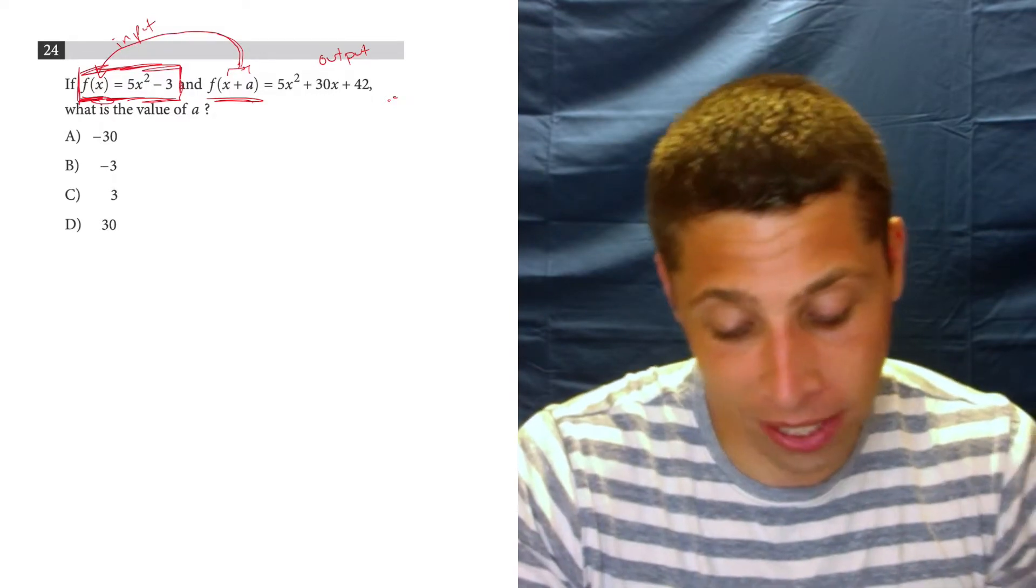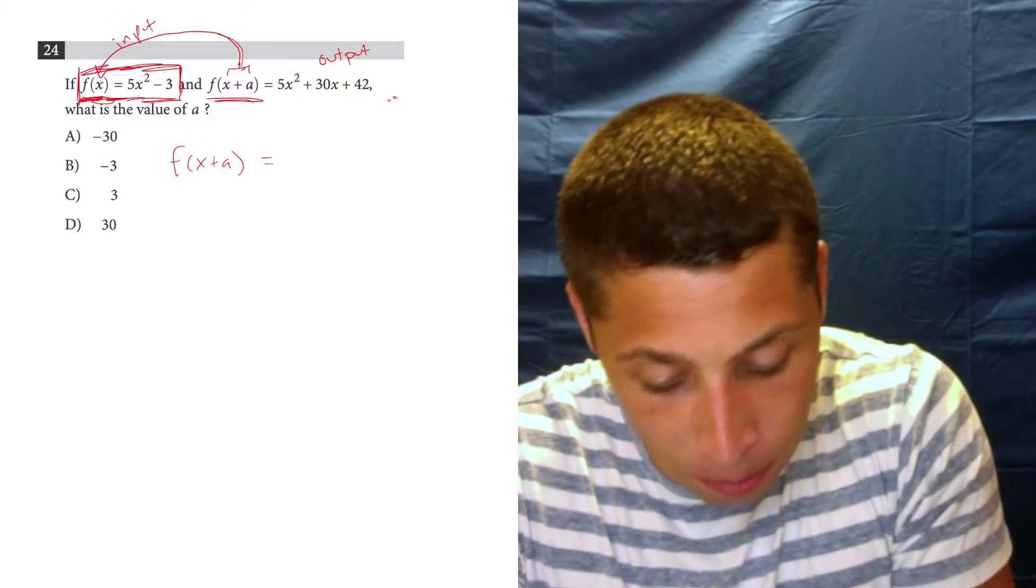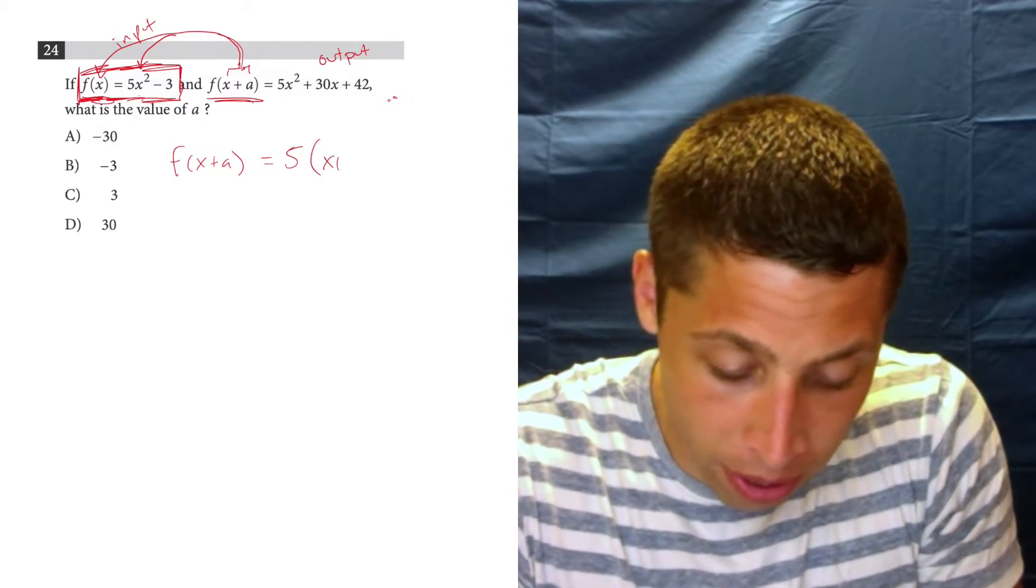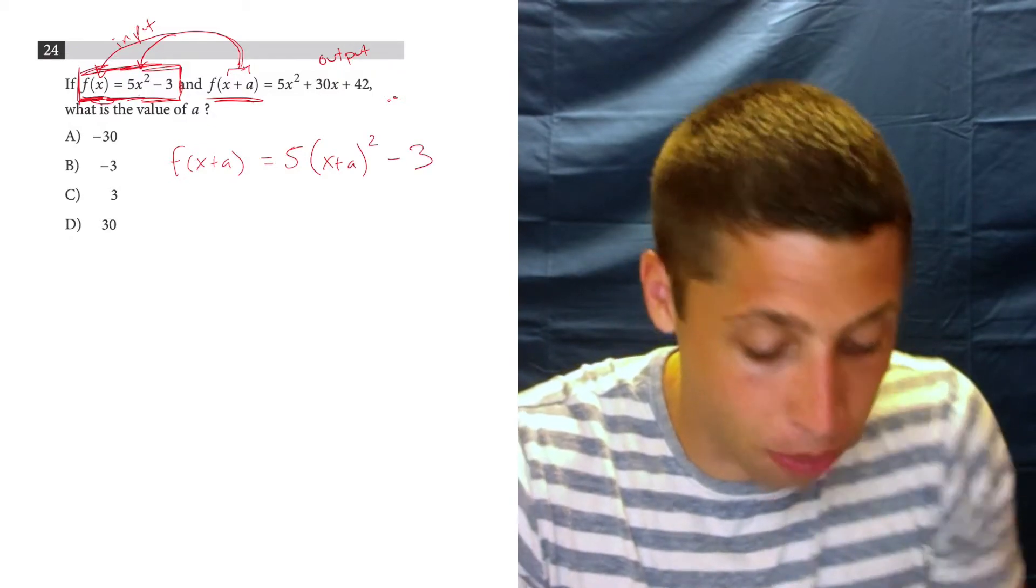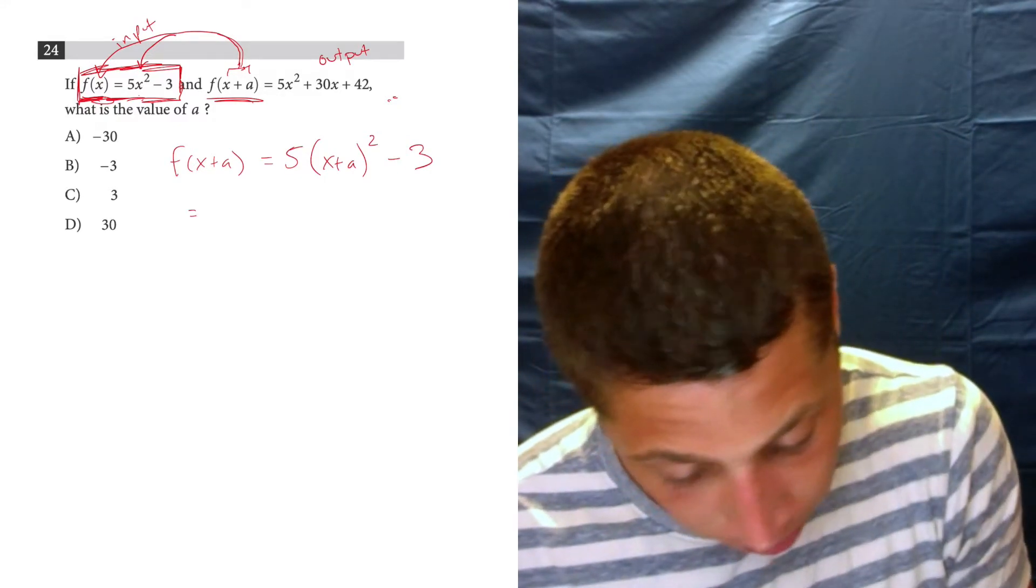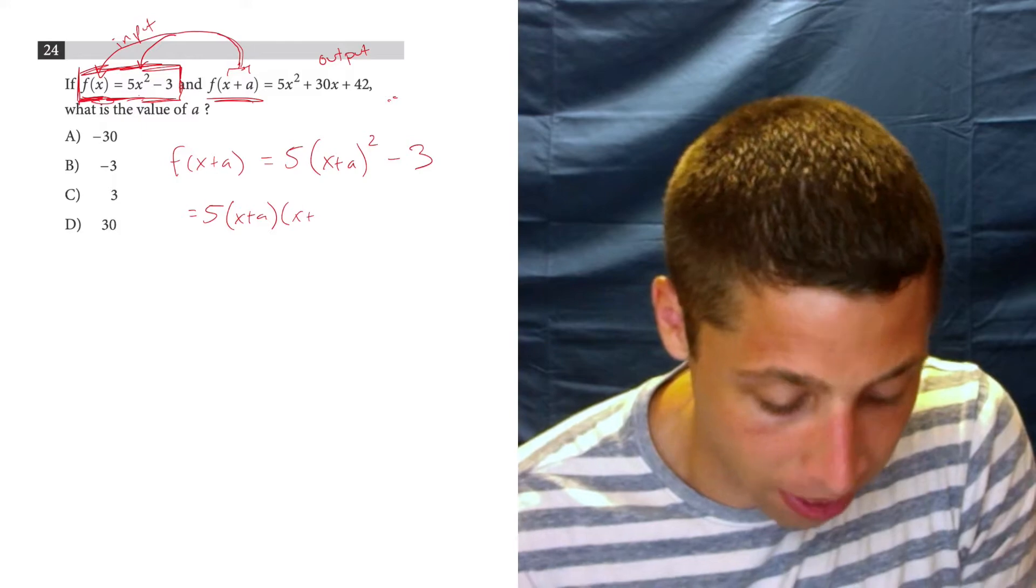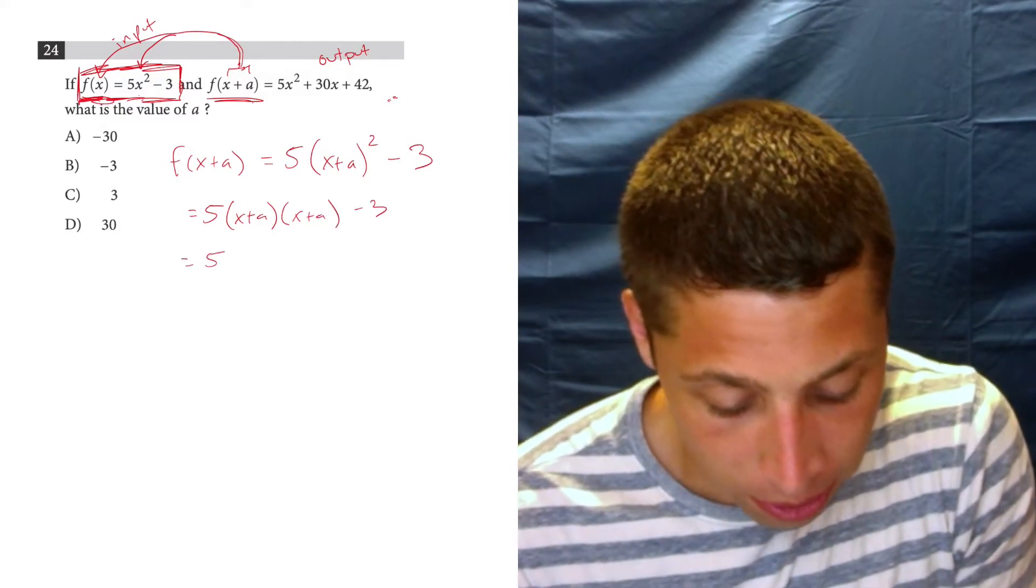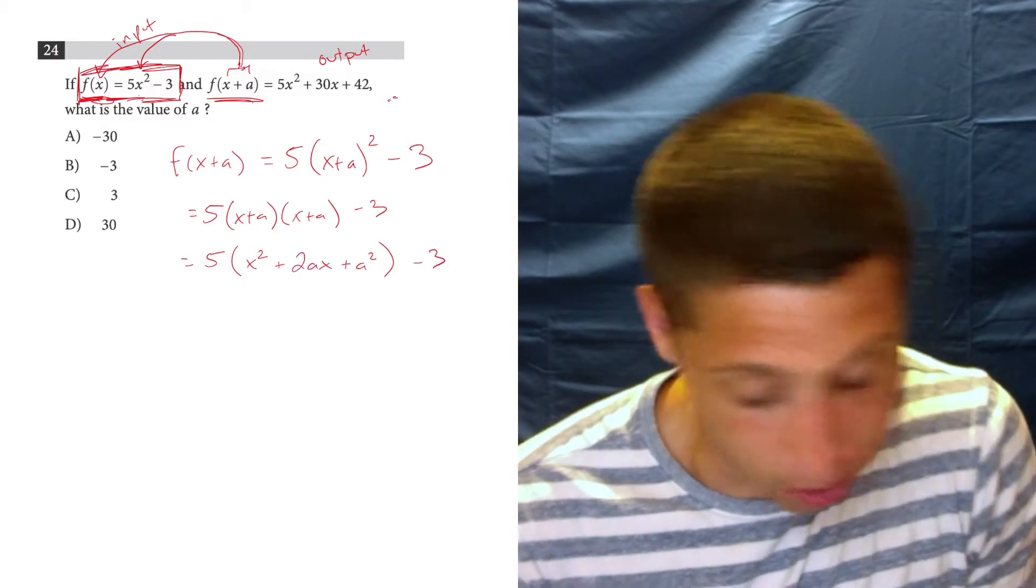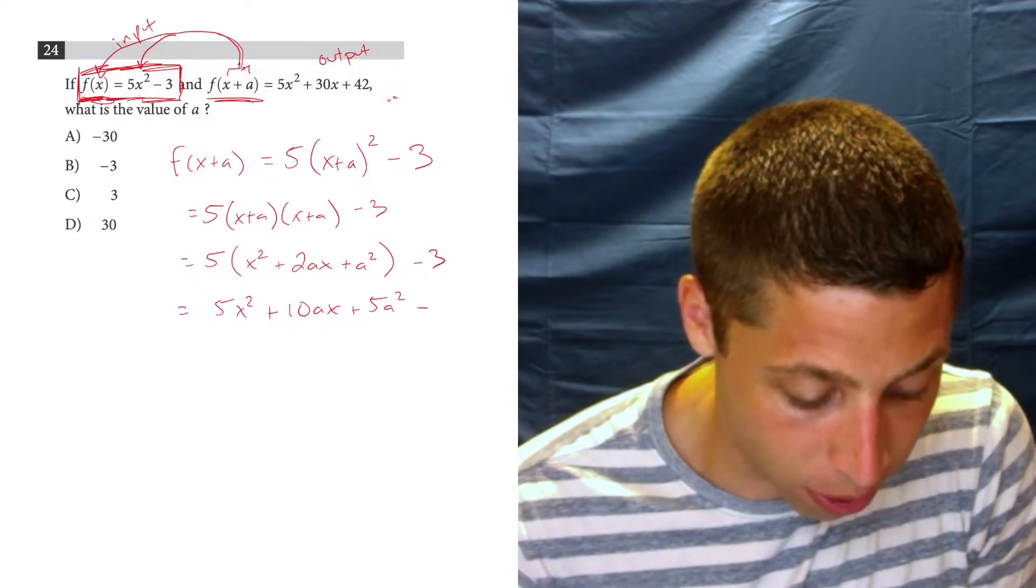Watch what we do here. We're going to take f(x+a), and we're going to put that x+a in place of all of the x's in that equation. So that means we're going to do 5(x+a)² - 3. So let's kind of move some space here. So 5(x+a) times (x+a). You might want to write this out so you can FOIL it. So that's x² + 2ax + a² minus 3. And then we distribute 5x² + 10ax + 5a² - 3.